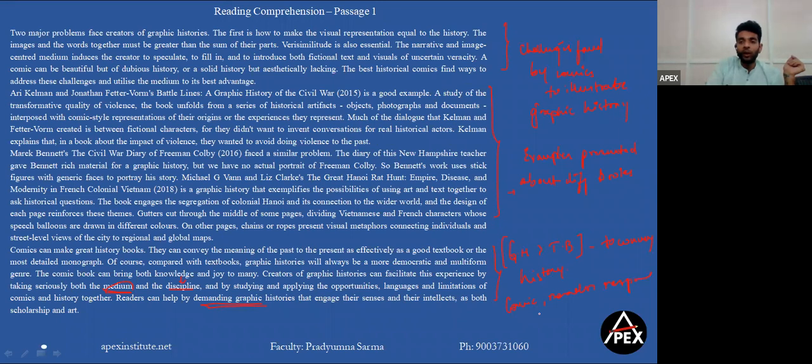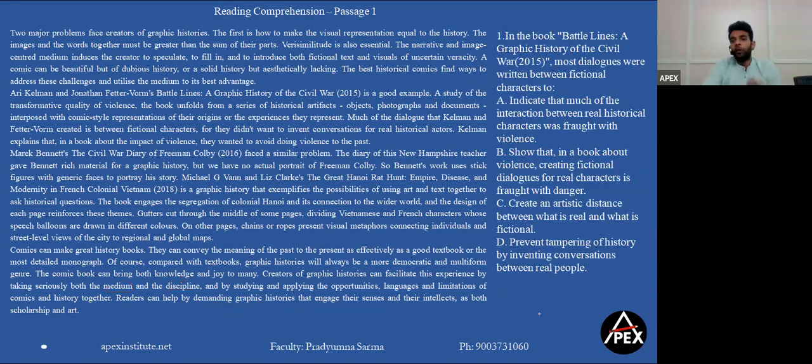So this is how the entire structure of our passage is being divided. Now let's quickly look at the first question. The first question says, 'In the book Battle Lines: A Graphic History of Civil War 2015, most dialogues were written between fictional characters to...' I can clearly say that this part is a specific detail type question, right? Clearly this is derived from these lines. I think I can talk about this being a part of only this particular paragraph. So reading this would be able to answer the question.